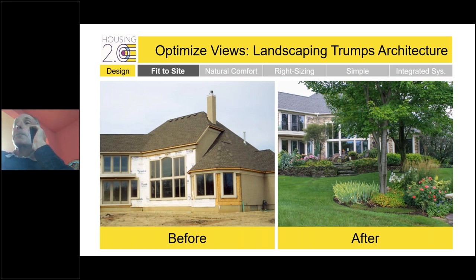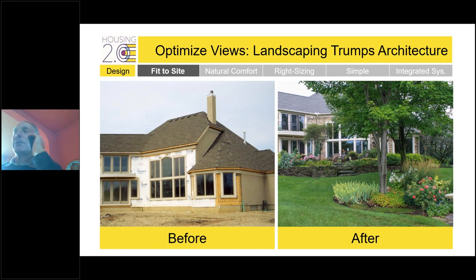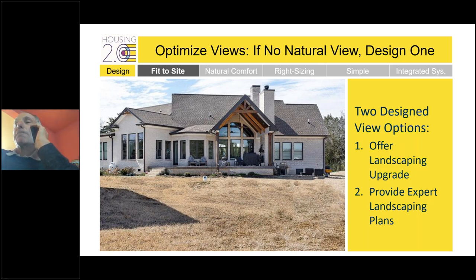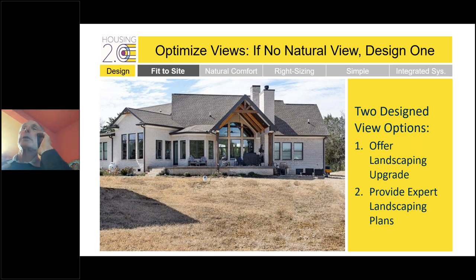When you don't have a view, you have to design one. Landscape architecture trumps home architecture — as a recovering architect, this is something I've come to realize. When you have a compelling view, whether water, vistas, cityscapes, or green spaces, you have to do everything to leverage it. The before-and-after of a well-landscaped home makes it evident how secondary the architecture is to the landscape. Most builders don't want to do the landscaping, but offering it as an upgrade or showing options in the model home is one approach.